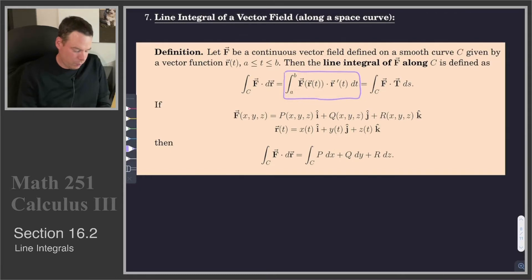One shorthand way to write that is the expression on the left: F dot dr. Dr is just shorthand for r'(t) dt. On the right, there's another shorthand way to write this. We are replacing r'(t) dt with a unit tangent vector T ds.